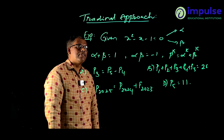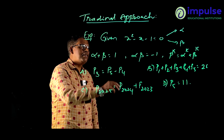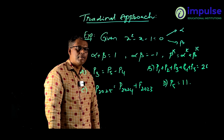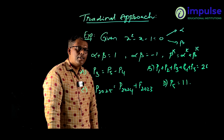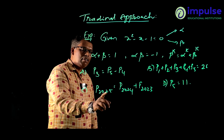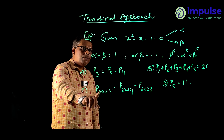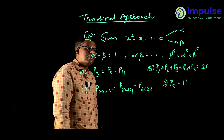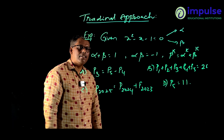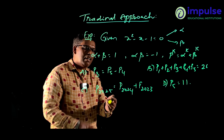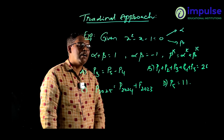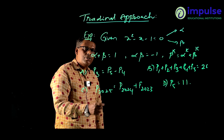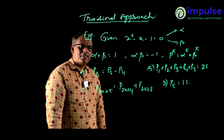Now let us get back to our initial question. With the traditional method we can evaluate options A, B, and D. But we cannot evaluate option C, because option C involves higher powers — p2025 = alpha^2025 + beta^2025 — which cannot be calculated using the traditional approach. To solve these types of higher power problems, I will explain a new approach.